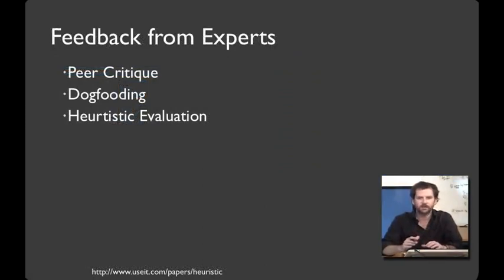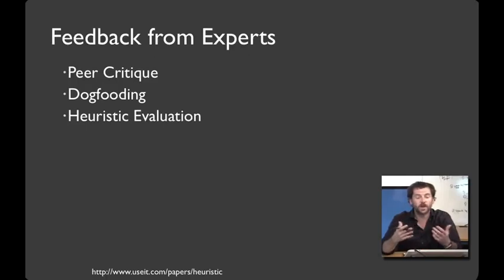Our third category of techniques is to get feedback from experts. For example, in this class, we're going to do a bunch of peer critique for your weekly project assignments. In addition to having users try your interface, it can be important to eat your own dog food and use the tools that you build yourself. When you're getting feedback from experts, it can often be helpful to have some kind of structured format, much like the rubrics that you'll see in your project assignments. And for getting feedback on user interfaces, one common approach to this structured feedback is called heuristic evaluation, and you'll learn how to do that in this class. It was pioneered by Jacob Nielsen.